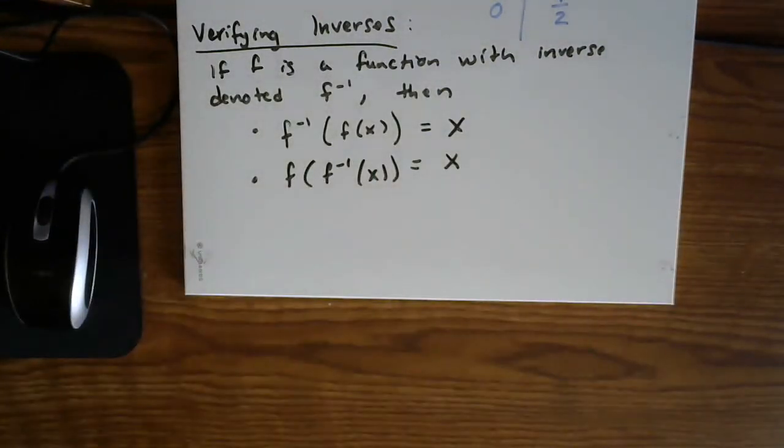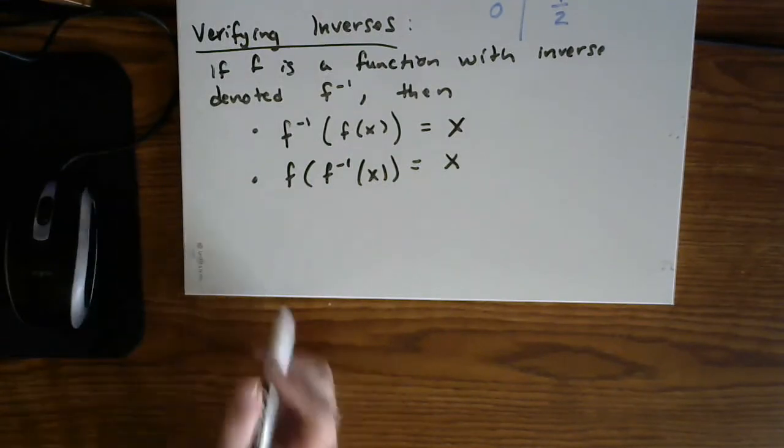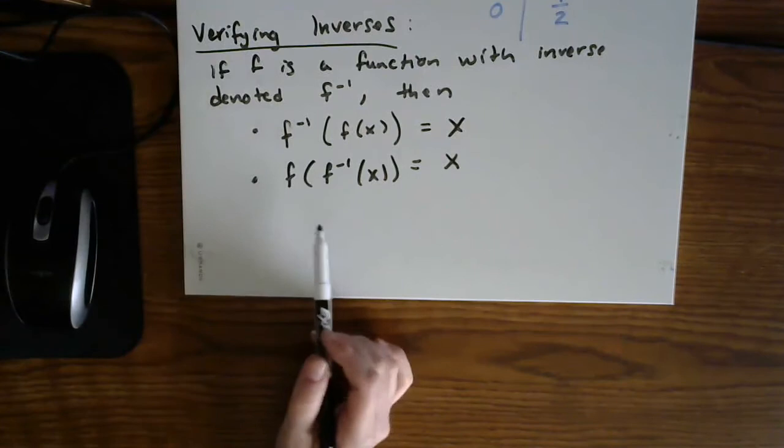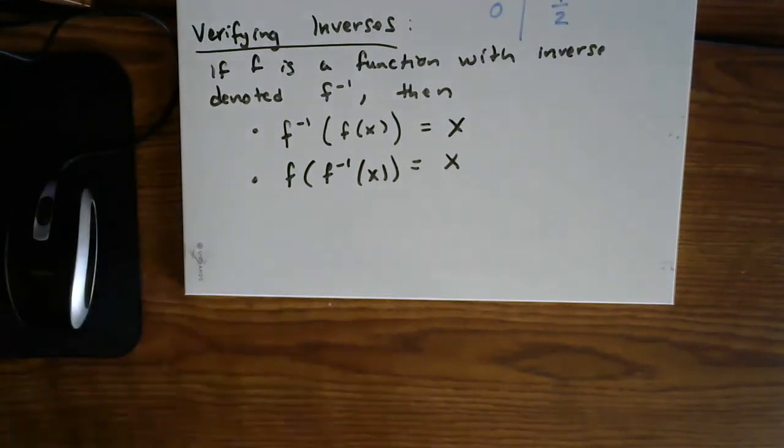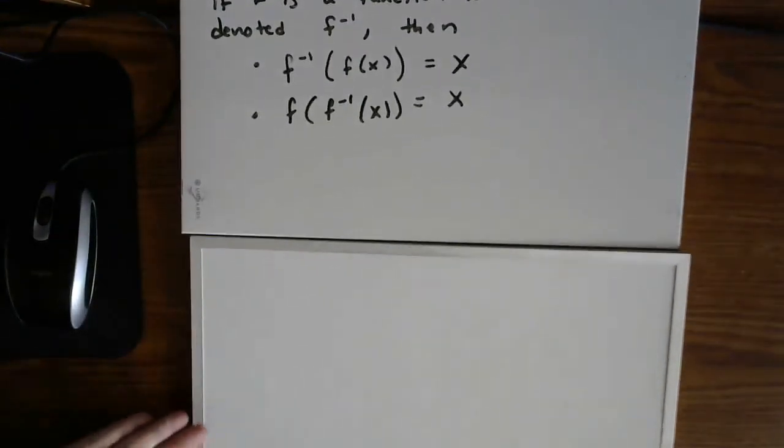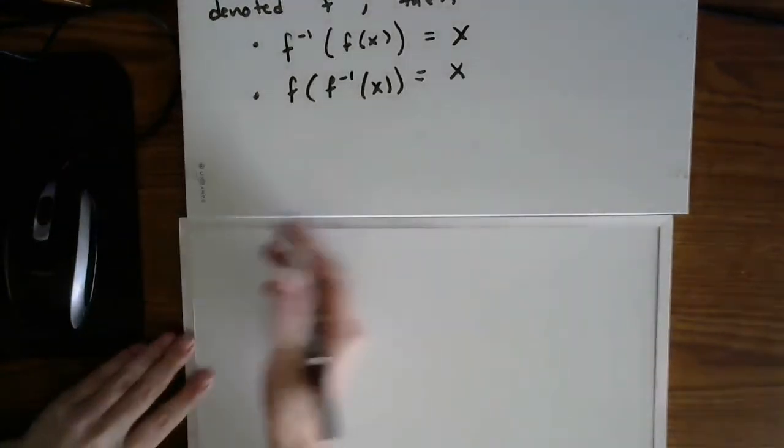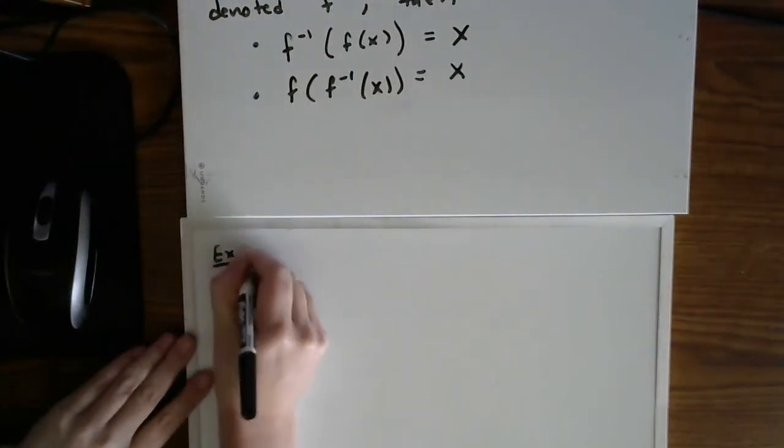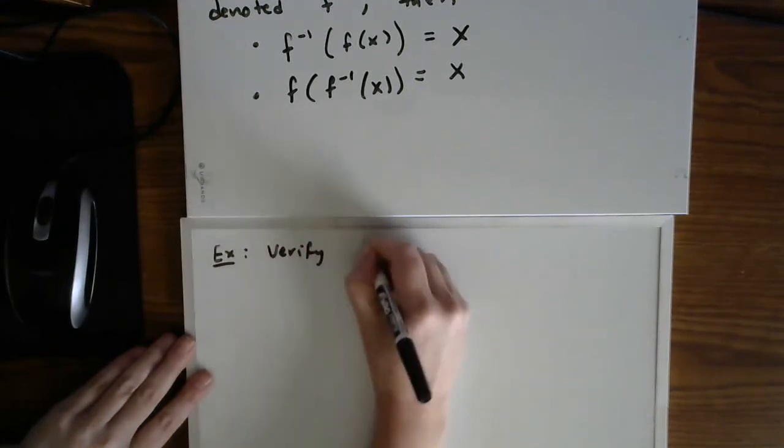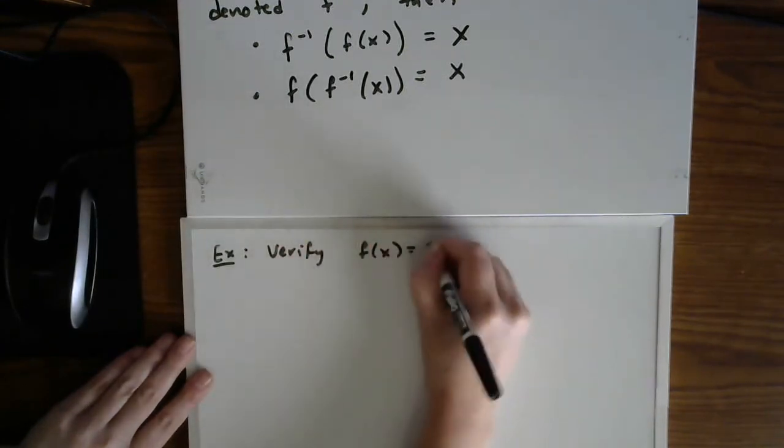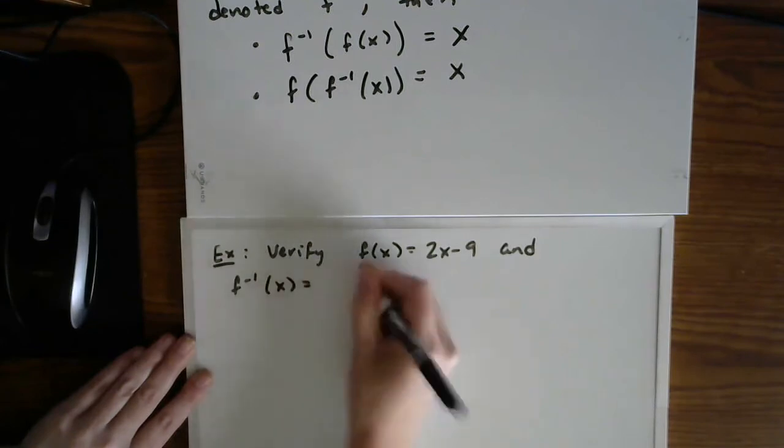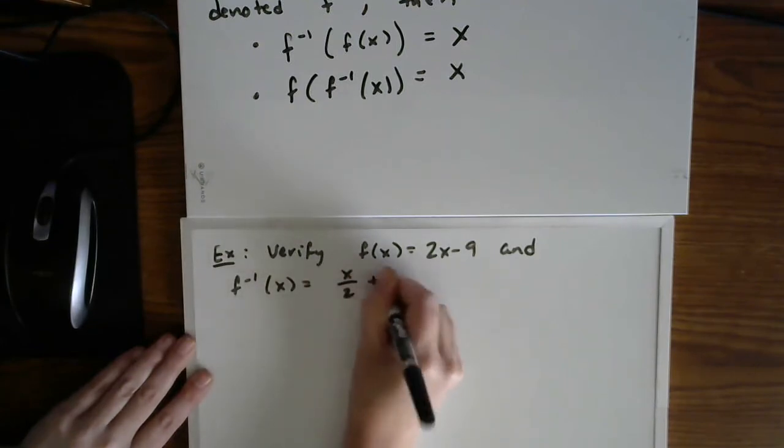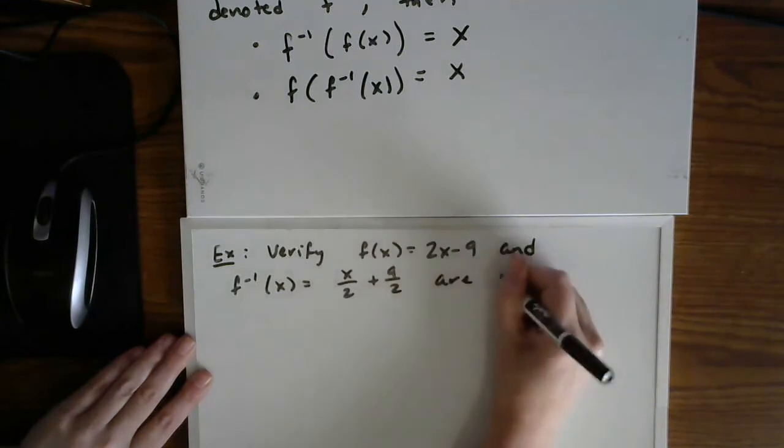So if you are ever verifying that something is an inverse algebraically, these are the compositions that you will need to perform. So let's go ahead and do an example that requires us to verify using composition. So in this example, verify f of x equals 2x minus 9 and f inverse of x, which is x over 2 plus 9 halves are inverses.